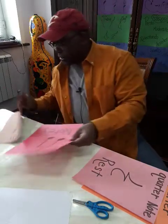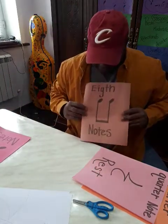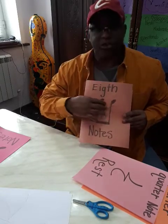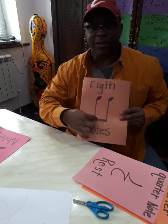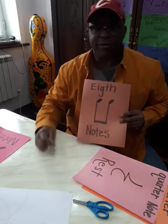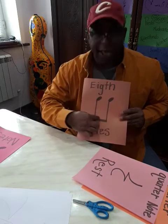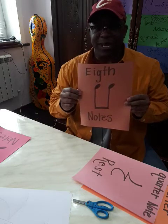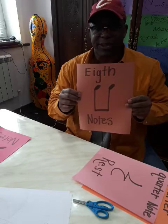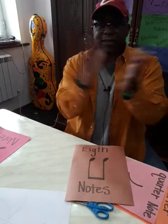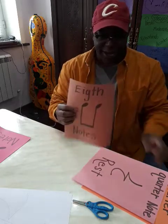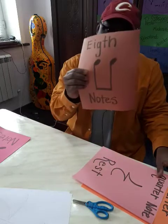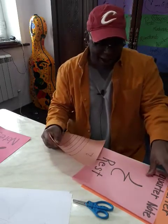Today we're going to talk about eighth notes. Eighth notes are just like quarter notes, but they have a bridge between them. This bridge makes them short. If it didn't have a bridge, it'd just be two quarter notes. When we play eighth notes, there are two of them together. Eighth notes — try it, ready, go. Eighth notes — try it again clapping. Okay, now we're going to play a little game.